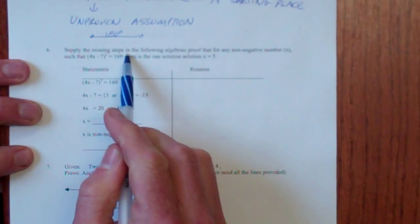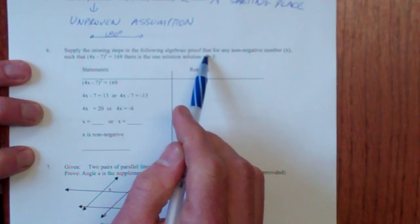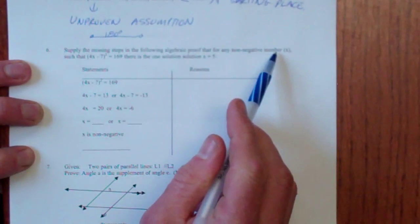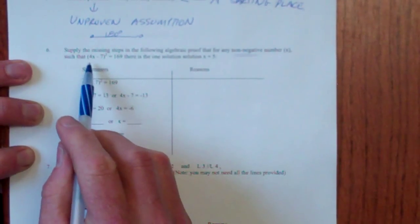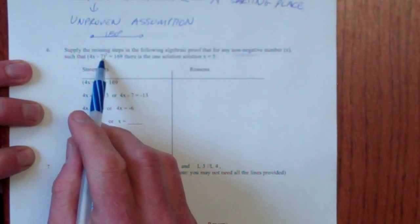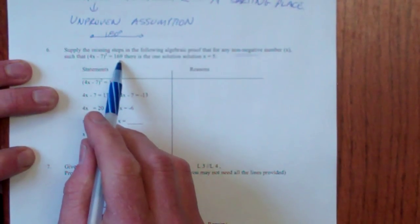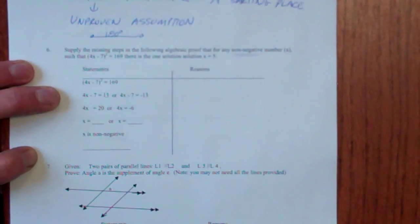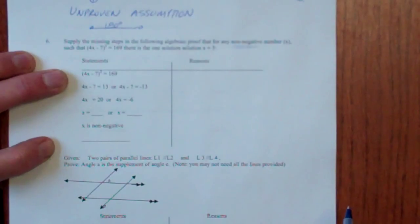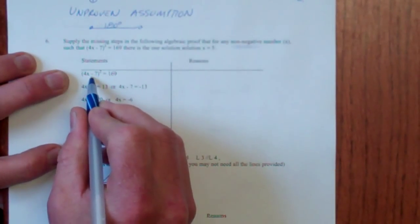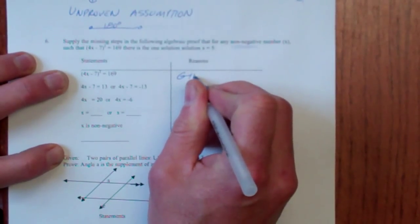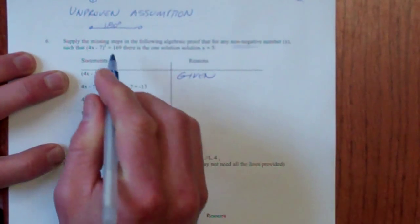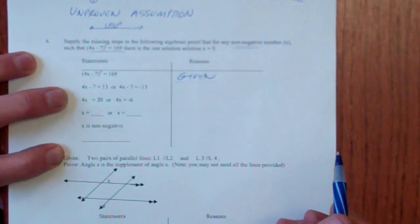Supply the missing steps in the following algebraic proof for any non-negative number x. Okay, so that means it cannot be negative such that 4x minus 7 squared equals 169. There is one solution and that must be x equals 5. A lot like the quiz. I think you guys might get this by now.